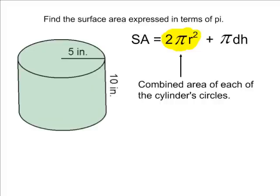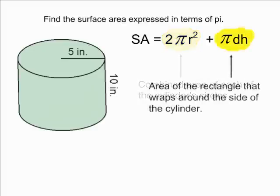The second part of our equation, pi times diameter times height, will find the area of the rectangle that is wrapped around the side of our cylinder.